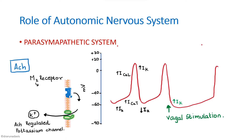There is a second mechanism by which acetylcholine decreases heart rate: it decreases the amount of cyclic AMP. When cyclic AMP decreases, heart rate also decreases. These are the two mechanisms by which acetylcholine acts on the SA node.